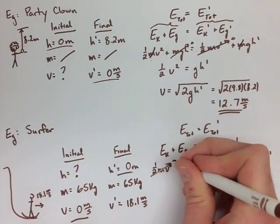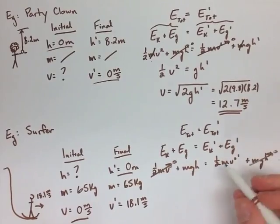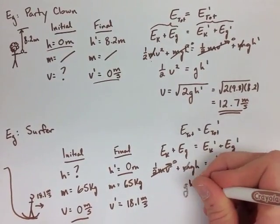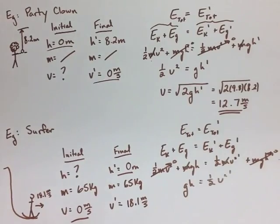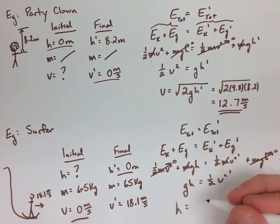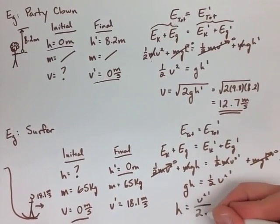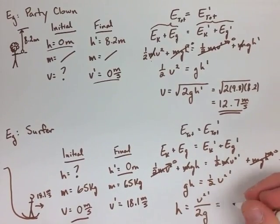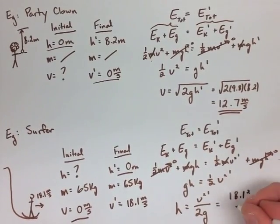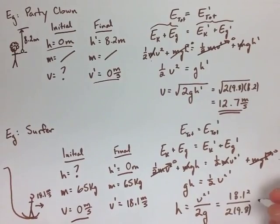When we substitute our values in, we also know we can cancel out our masses. So we're left with GH equals 1/2 V squared prime. That means H is equal to 1/2 V squared prime over G. We substitute our values in and we get 16.7 meters high.